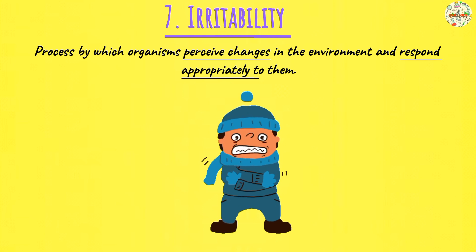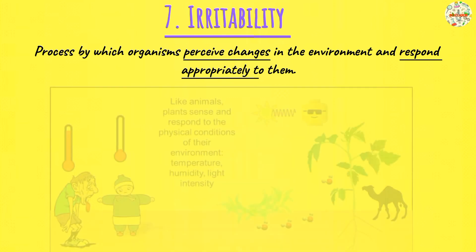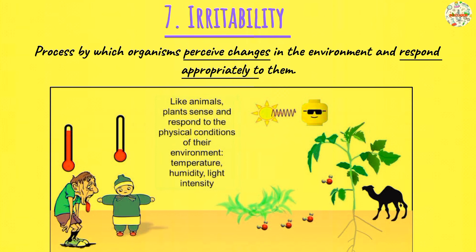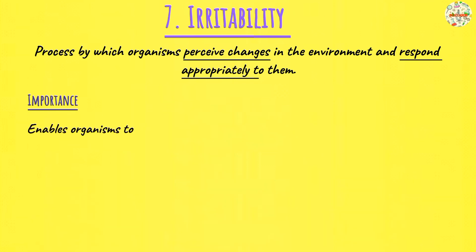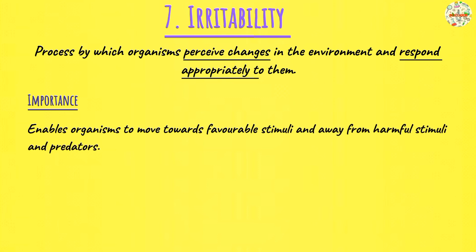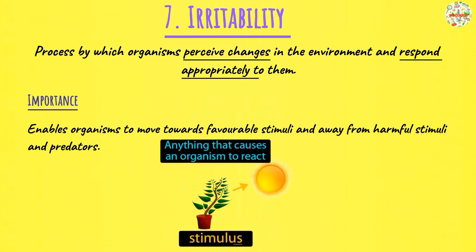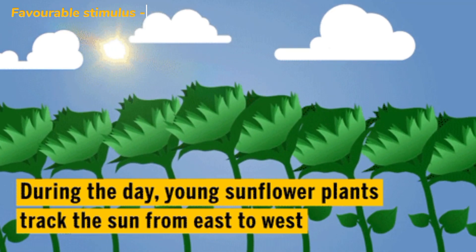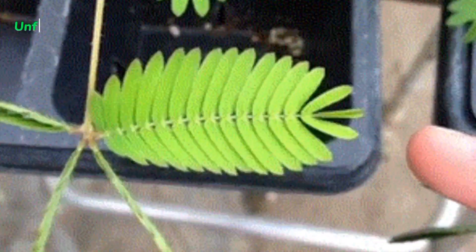When it comes to irritability, animals are very rapid in their response — they respond very quickly to changes in their environment, but plants respond slower. All living organisms are going to have all of these eight characteristics in total. Irritability is important because it enables organisms to move towards favorable stimuli and escape harmful stimuli in their environment. Stimuli are simply changes in the environment — some changes are positive and good for you, and others are negative. Irritability allows organisms to move towards favorable stimuli and move away from the negative ones.